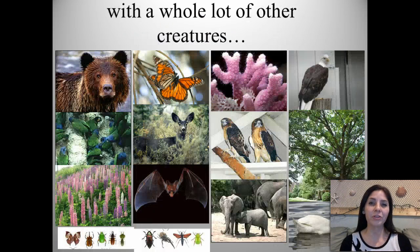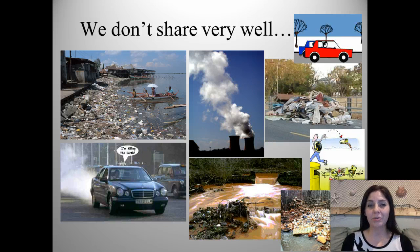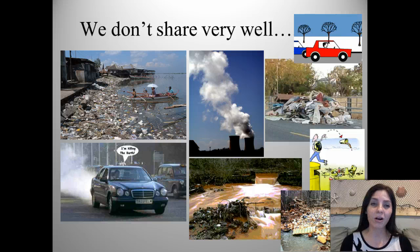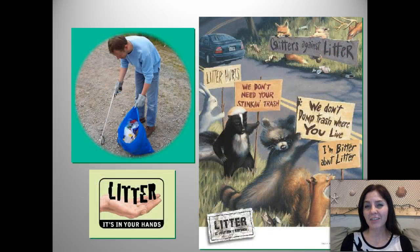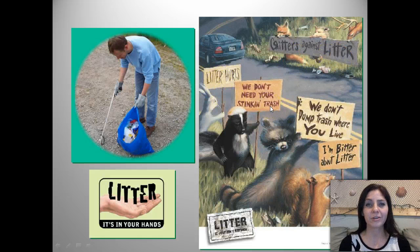We share the Earth with a lot of other creatures — other mammals, insects, plants. We don't really do a very good job of sharing it. We pollute the Earth with fossil fuels that we burn in our cars, from factories. We have trash that we throw everywhere, our own waste, and it kind of hurts the environment. As you can see over here, I have my little critters protesting: 'Critters against litter. Litter hurts. We don't need your stinking trash. We don't dump trash where you live. And I'm bitter about litter.'